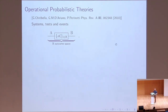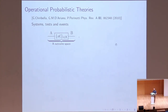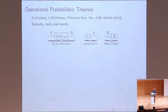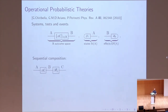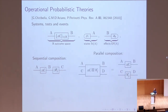The primitive notions of an operational probabilistic theory are those of systems, tests, and events. Systems are diagrammatically represented by wires. Tests and events are represented by boxes, and they correspond to transformations that can change the state of a system and the system itself. There are two special kinds of events: the notion of state and effect. One can also compose tests in two possible ways: sequential composition, corresponding to performing experiments one after the other, or parallel composition, by which we can define multipartite systems — corresponding to two different parties performing experiments in separated labs.